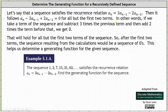In other words, if we take a term of the sequence and subtract three times the previous term and then add two times the term before that, we get zero. That will hold true for all but the first two terms of the sequence, because a recurrence relation does require two initial conditions. So after the first two terms, the sequence resulting from the calculations would be a sequence of zeros.